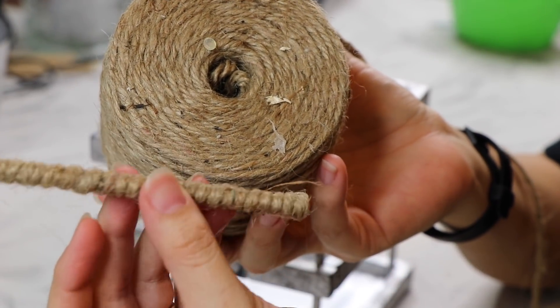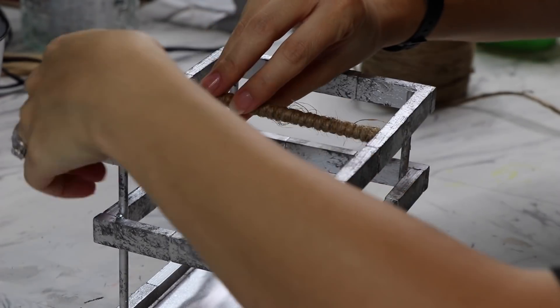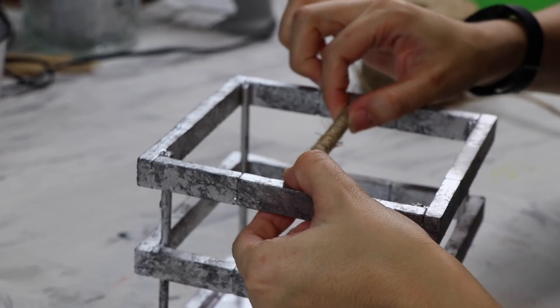Now I'm going to make two bars for the utensil holder using some twine and then wrapping it around some of the dowels. It's going to go on the top frame and the bottom frame.